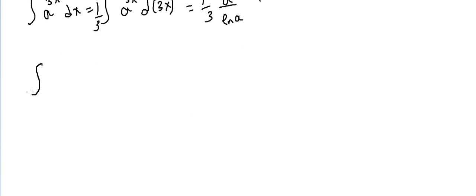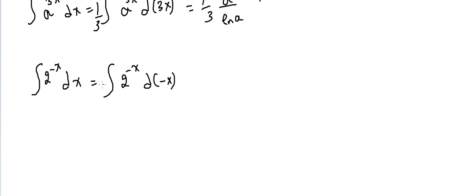For example, the integral of 2^(-x) dx. The base is 2, not e, so we have to divide by ln 2. We write it as 2^(-x) du where u is -x. The derivative of -x is -1, so we multiply by -1 to compensate. The answer is minus 1 over ln 2 times 2^(-x) plus c.